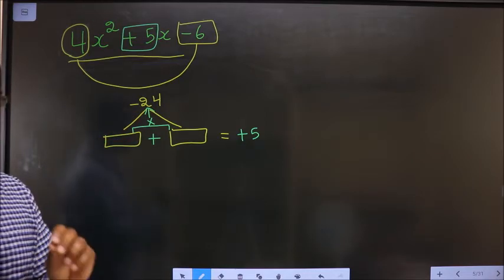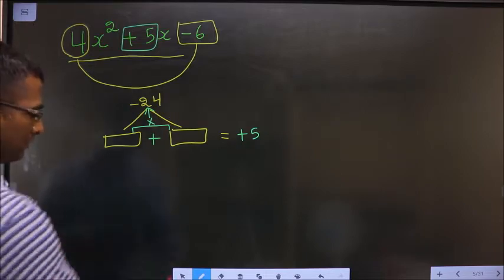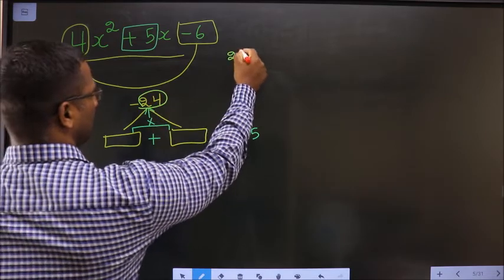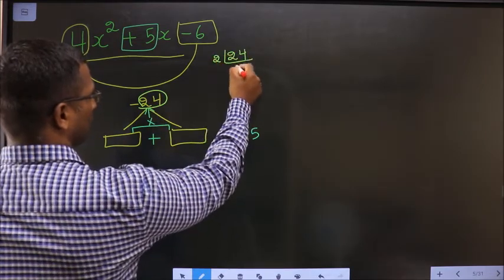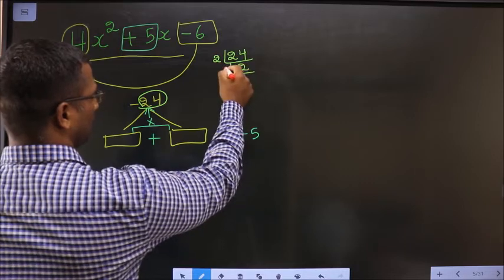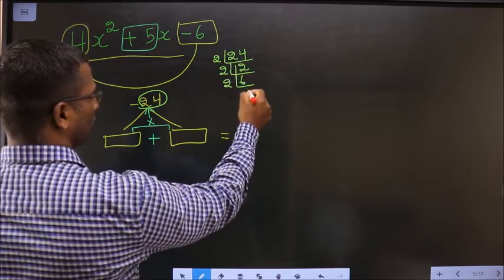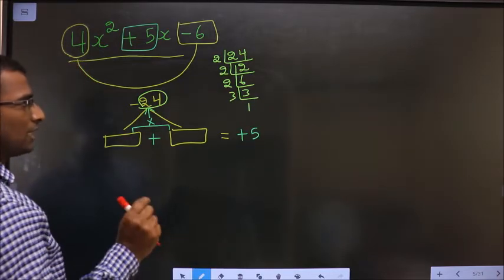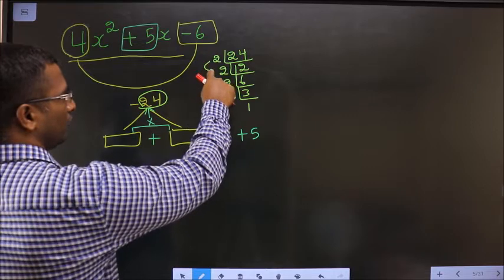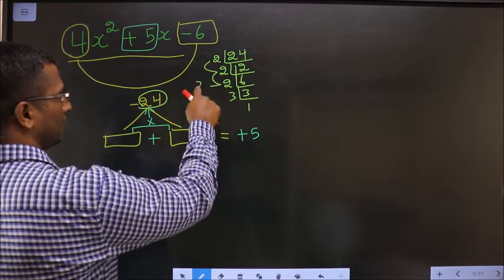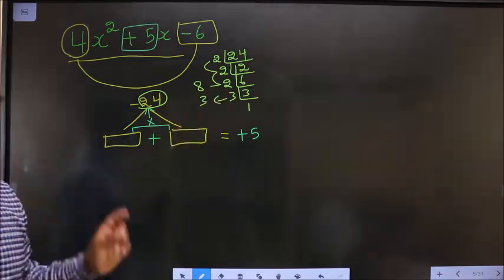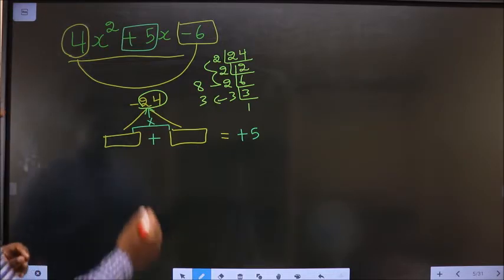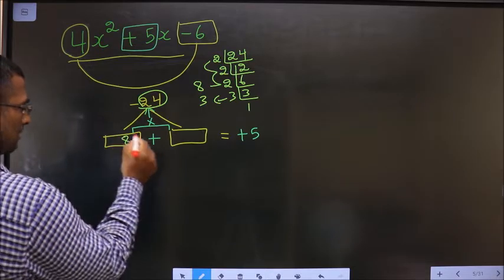How do I get those 2 numbers? By taking LCM of 24. So if I take LCM of 24: 2, 12, 2, 6, 2, 3, 3, and 1. So the 2 numbers are 2 into 2 is 4, 4 into 2 is 8, and the second number is 3. 8 minus 3 is 5, and 8 into 3 is 24. So write the 2 numbers: 8 and 3.